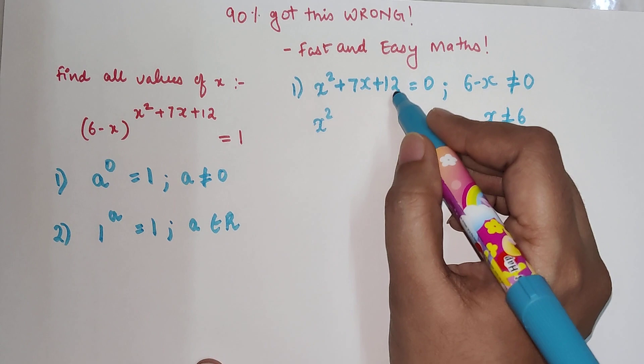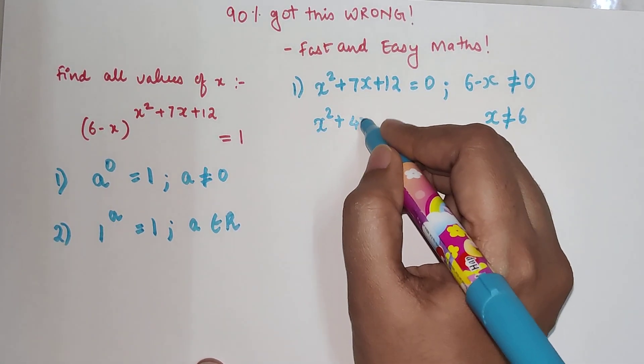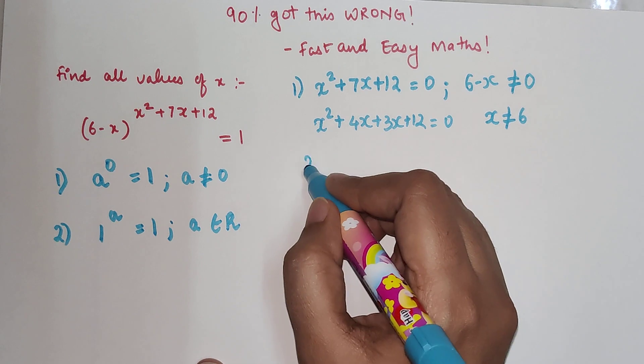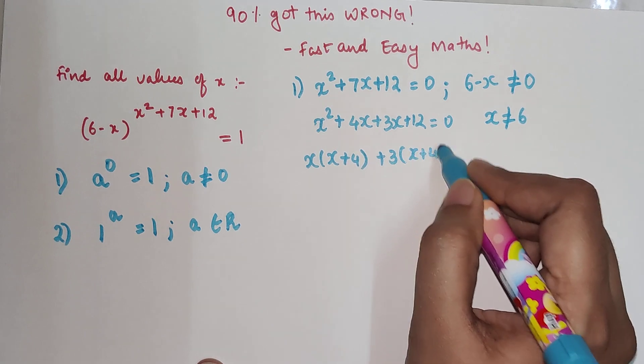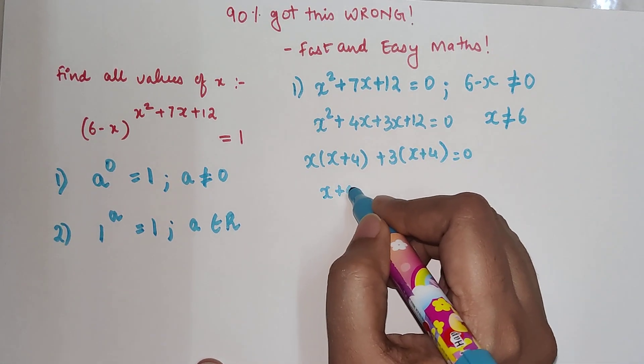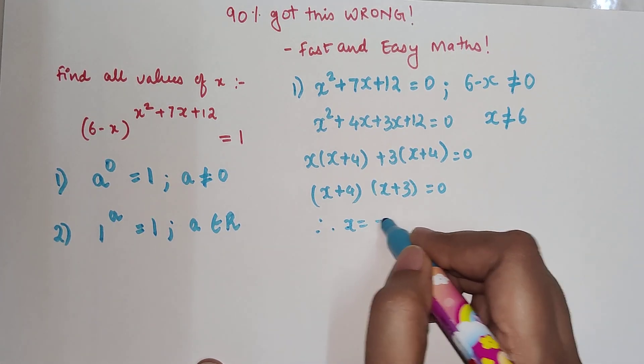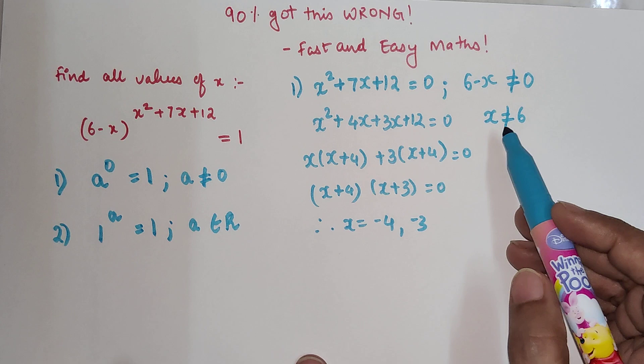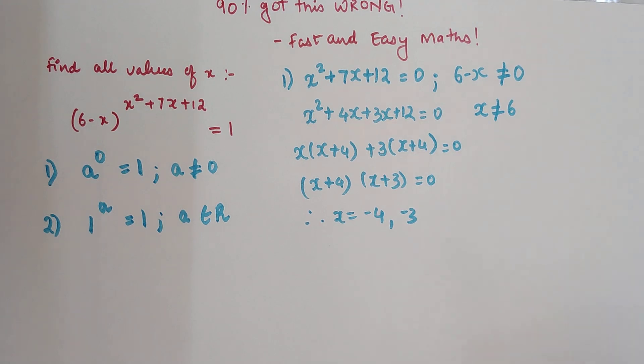So now when you expand this, I know that factors of 12, which are 3 and 4, will get me 7. So let's write that down. Taking common x + 4 plus 3 taken out, so I get x + 4 = 0. So x + 4 and x + 3 equals zero, therefore I can say x equals -4, -3. And we're good to go because we wanted to make sure the value of x cannot be 6. The values we got were -4 and -3, so these values will be taken.